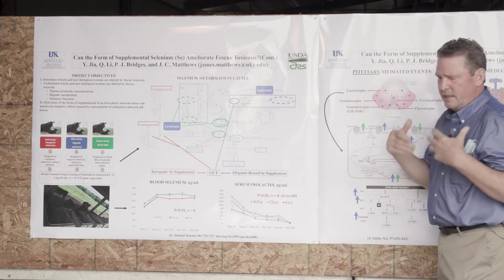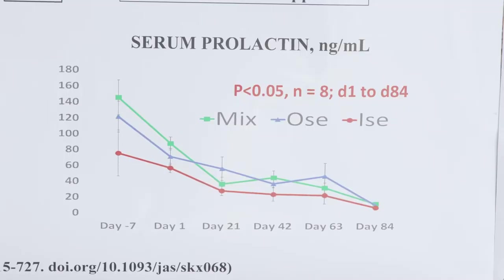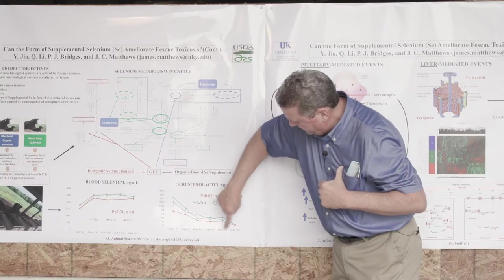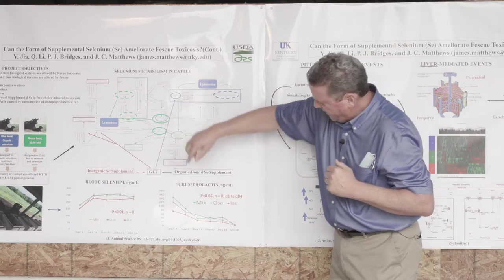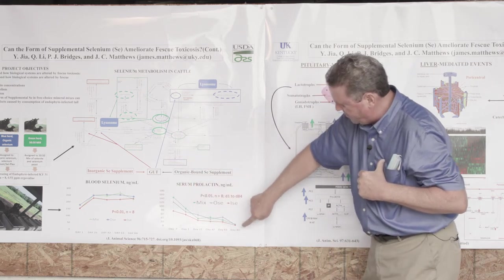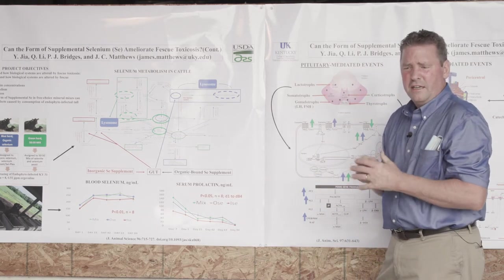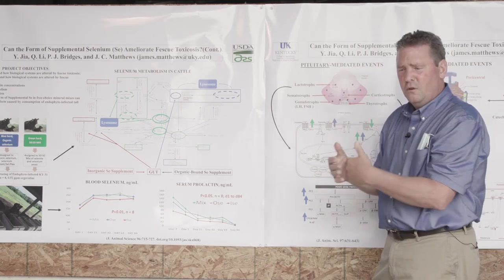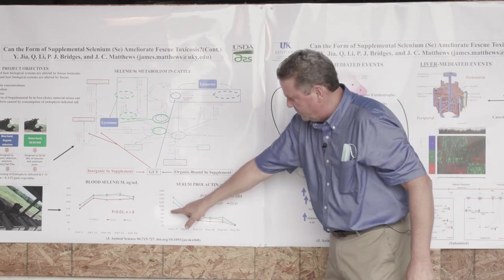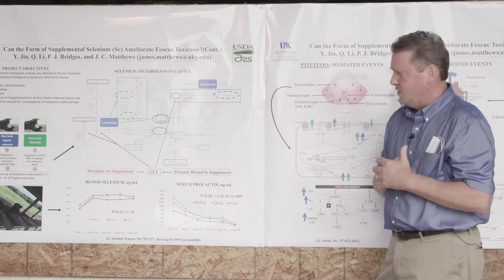The question is, does it help prolactin, selenium prolactin, which is a hallmark of fescue toxicosis? And as you can see, again, the red line is a decreasing amount of prolactin for the red herd calves, versus the green and blue herd, which have higher levels of prolactin. And over this period, this mounts about a 40 to 50 percent increase prolactin, or an amelioration of the fescue-induced decrease in prolactin in these steers grazing endophyte-infected tall fescue.